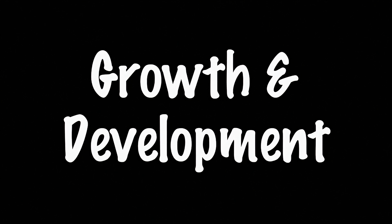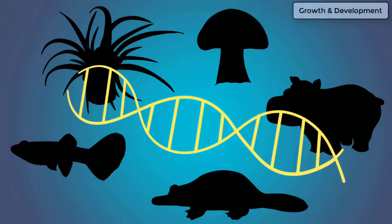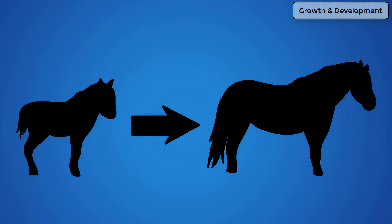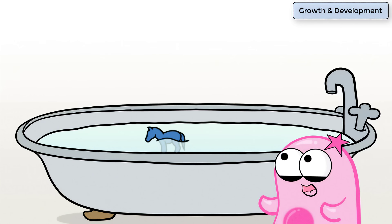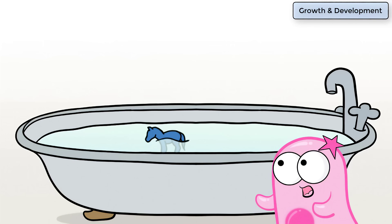Growth and Development. Living organisms have genetic material to code for development and growth. A baby pony will develop and grow up into a grown-up pony because its genetic material contains the instructions for this development and growth. Bathtub-Grown Pony may increase in size due to water entering it, but it's not growing and developing based on genetic instructions.